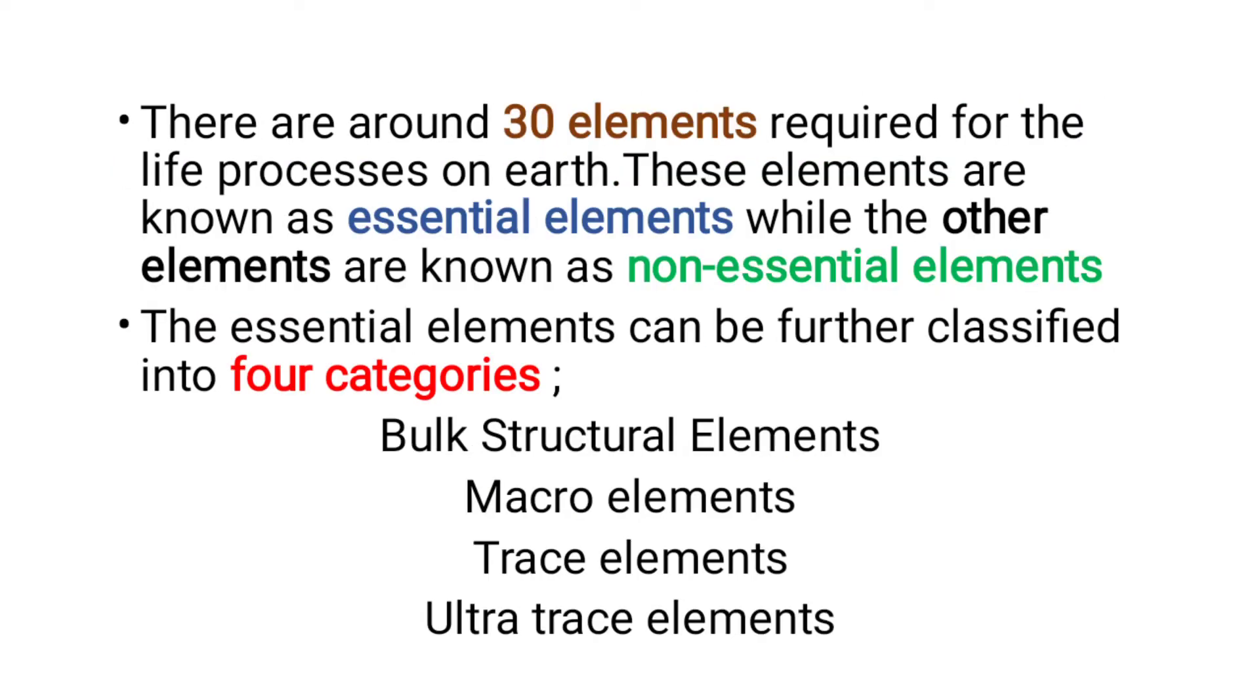There are 30 elements which are important for life processes on earth, and they are called essential elements while others are called non-essential elements. The essential elements are further classified into four categories: bulk structural elements, macro elements, trace elements, and ultra trace elements. Now we'll discuss each one.